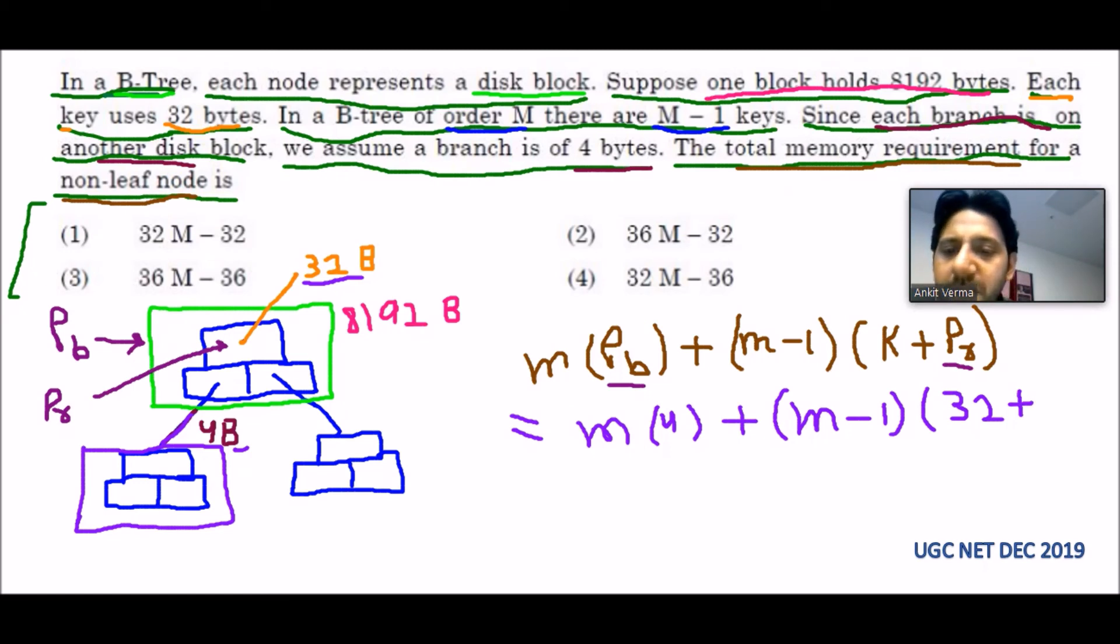Plus PR, record pointer. They have mentioned the block pointer because it is pointing to the other block, but they have not given the size of record pointer, so we assume it is 0. That will equal 4M plus 32 plus 0 is 32. Multiply 32M minus 32, and that equals 4 plus 32, that will be 36M minus 32.